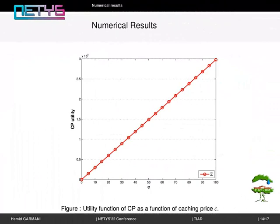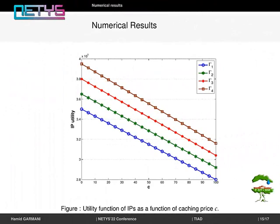This plot demonstrates the utility function of content provider as a function of caching price. Utility function increases with respect to the caching price. It's clear that caching increases content provider payoff.